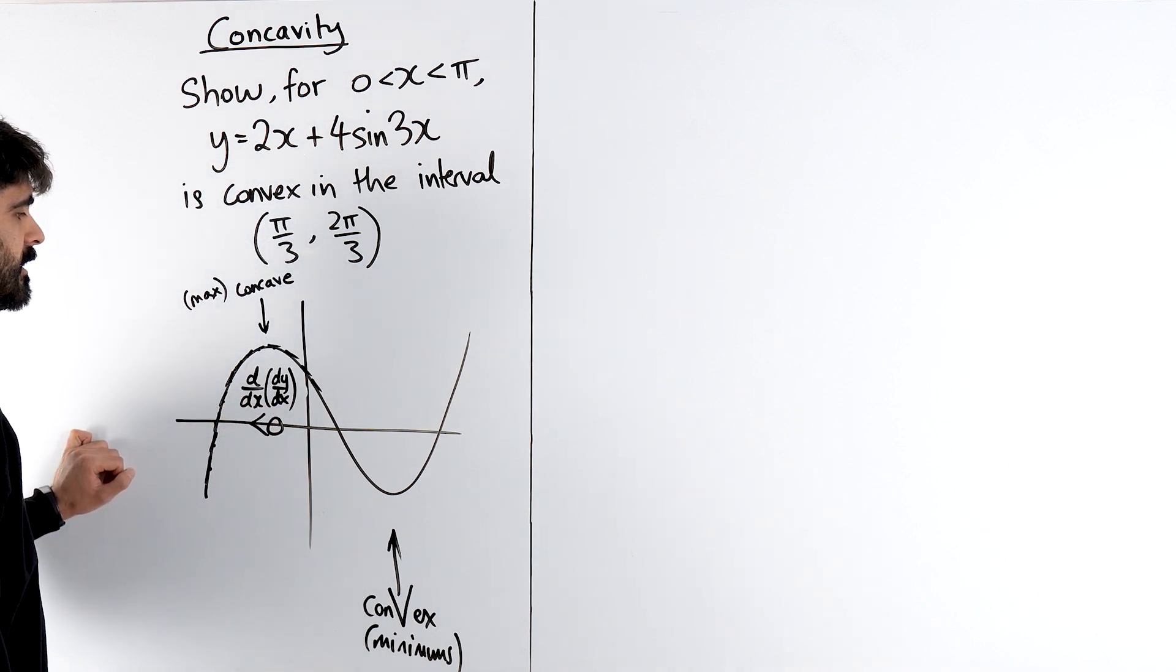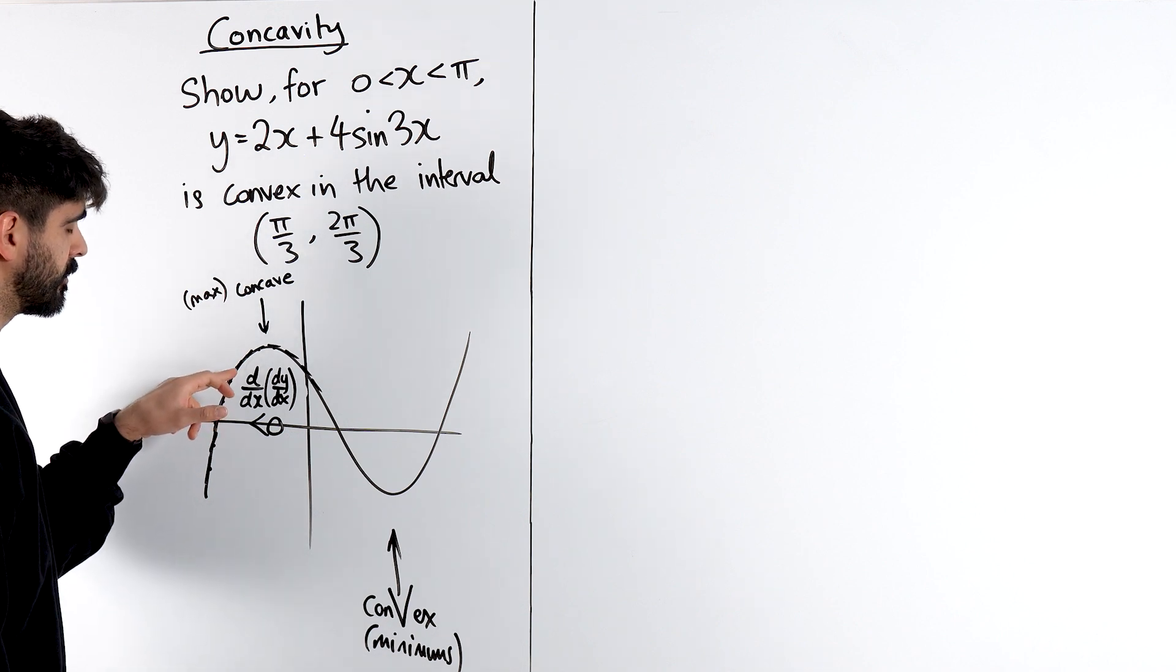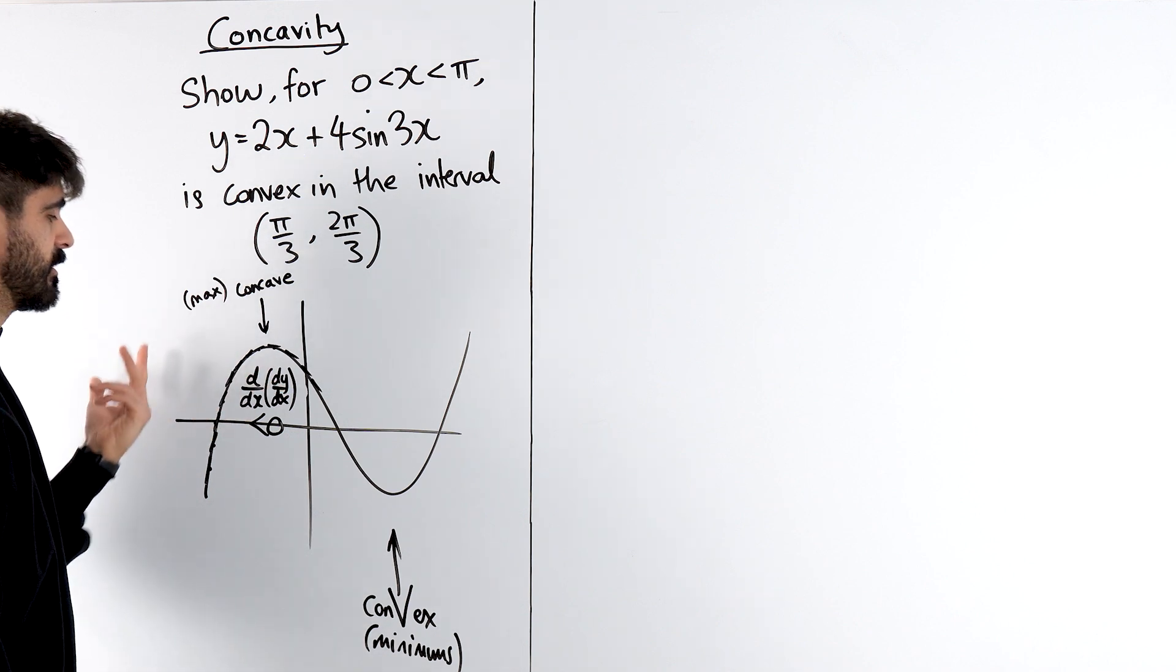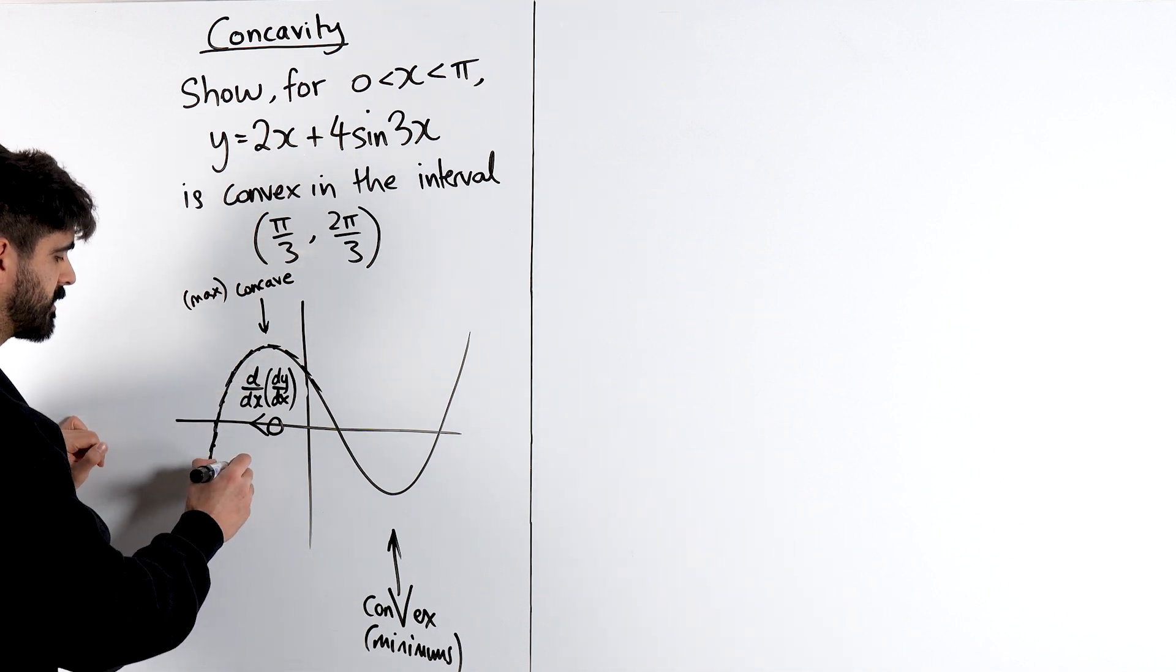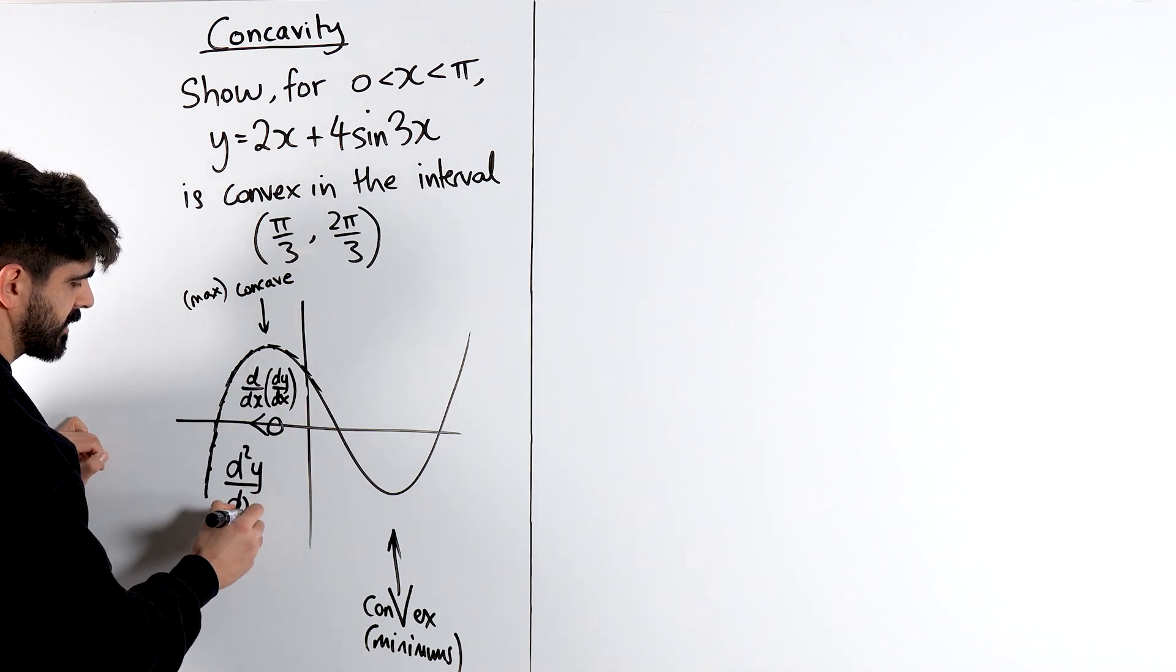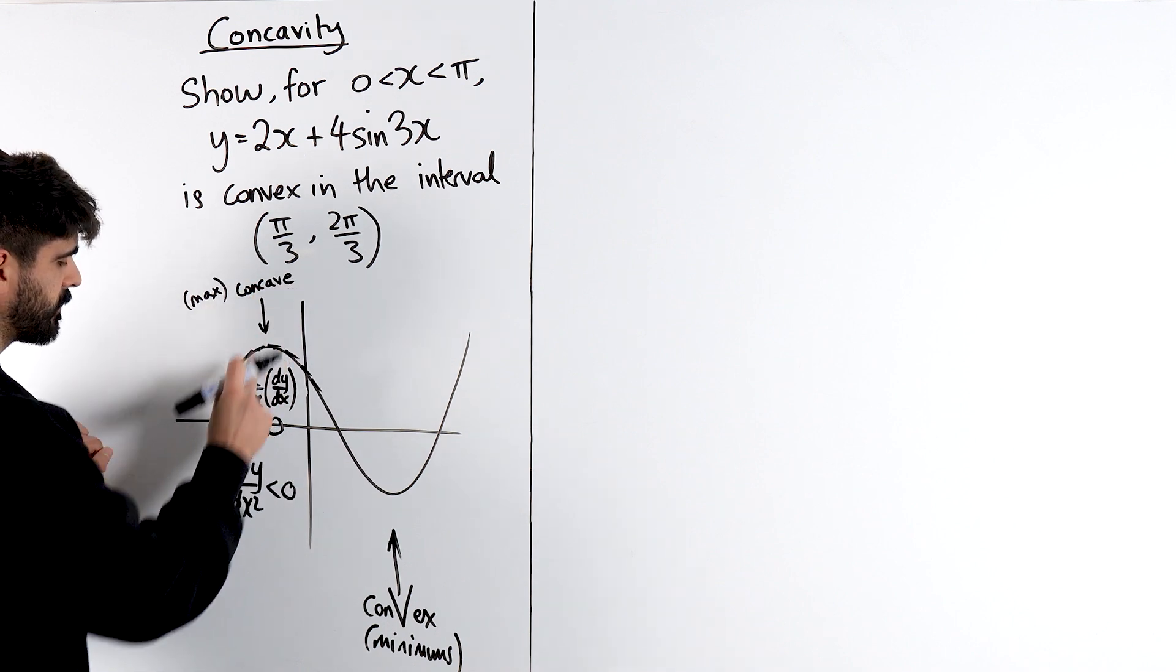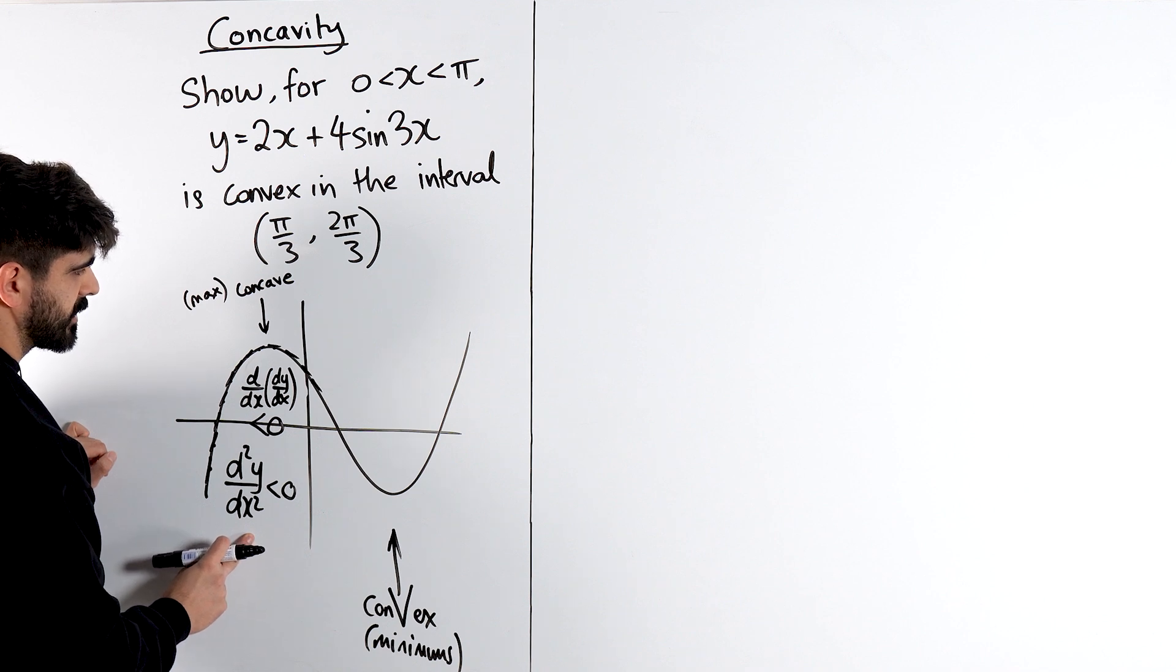Now, just doing the multiplication here, d times d, d squared. And then dx times dx is dx squared is less than zero. So for concave, d²y/dx² is less than zero. And you guys kind of really know this. You know at maximums, the second derivative has to be less than zero.